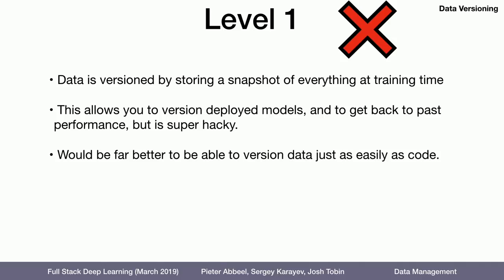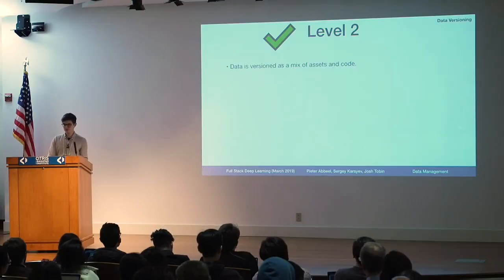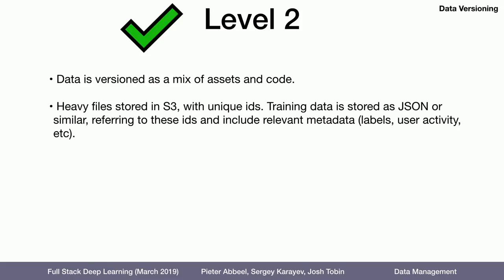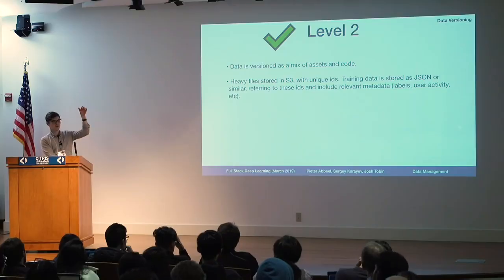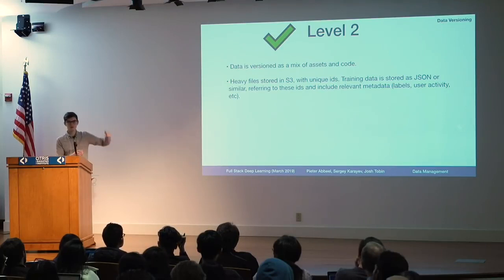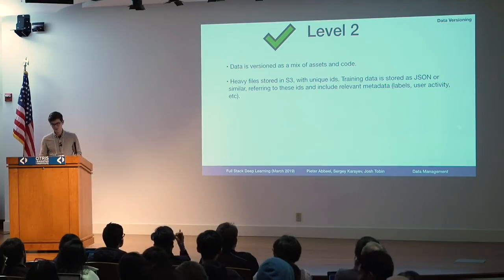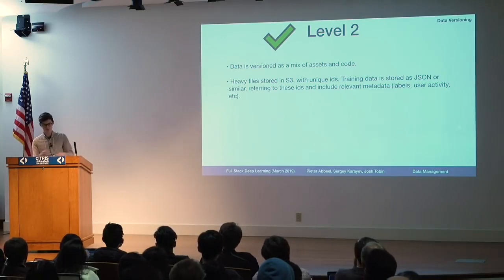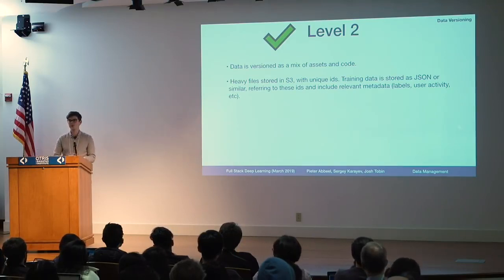It'd be better if we could version data just as easily as we can code. Level two is data versioned as a mix of assets and code. For example, if you're doing image processing or speech recognition, your actual sound files or images are stored in S3 with unique IDs. Your training data is then a list of those IDs, potentially with metadata like labels. You can check that JSON or structured data format into version control, and when you check it out you can go back to any point in time. As long as you never delete anything from S3, you can get back to whatever data you had.